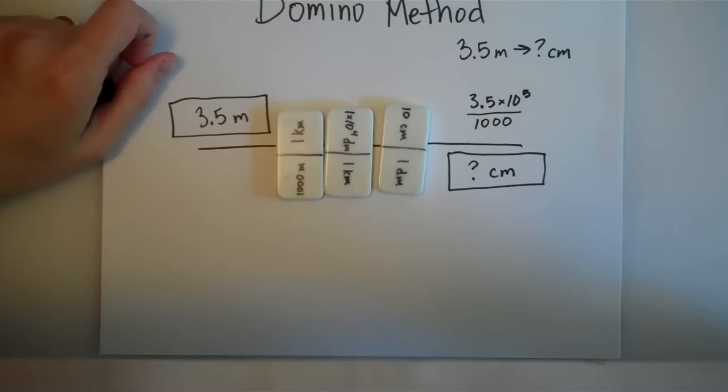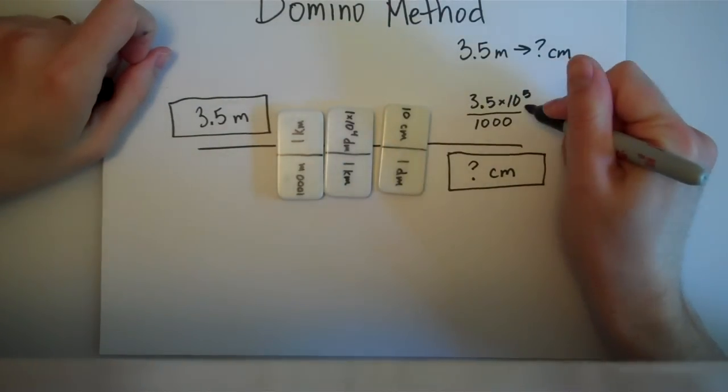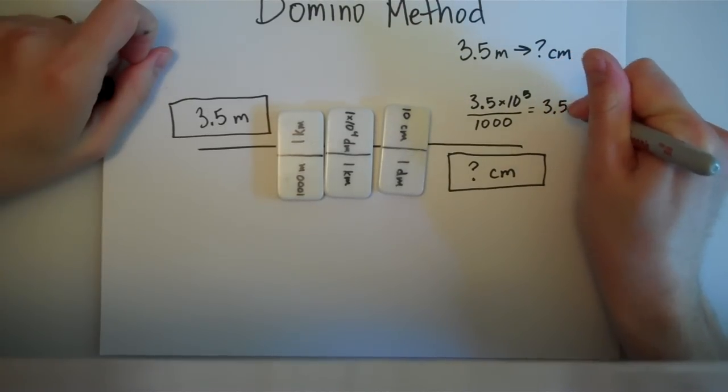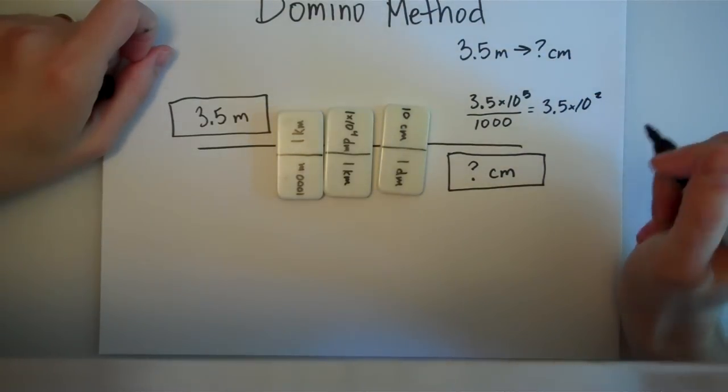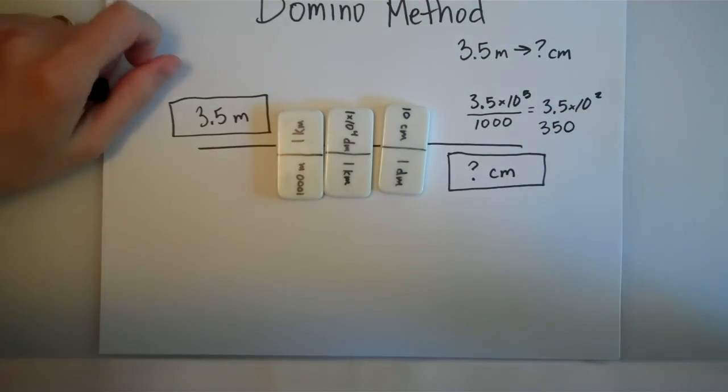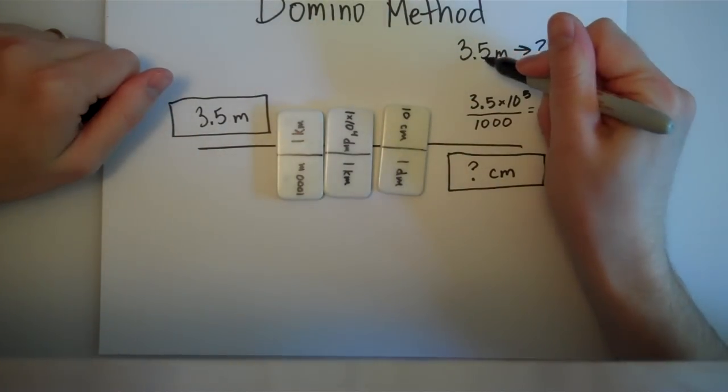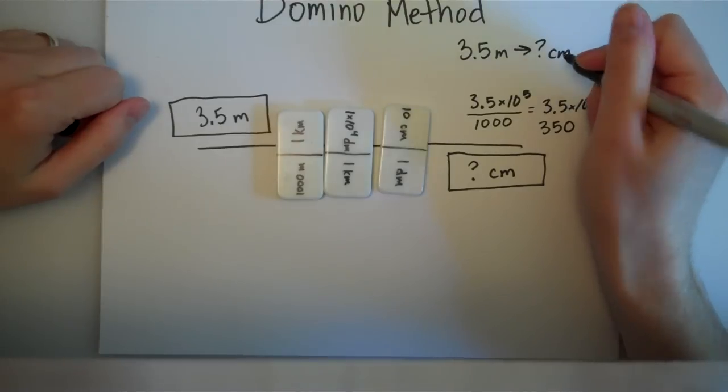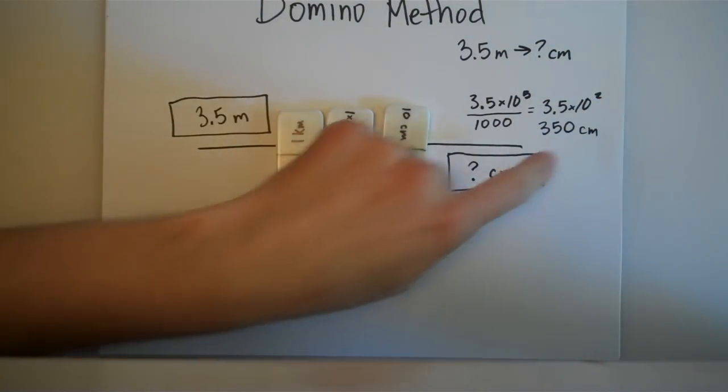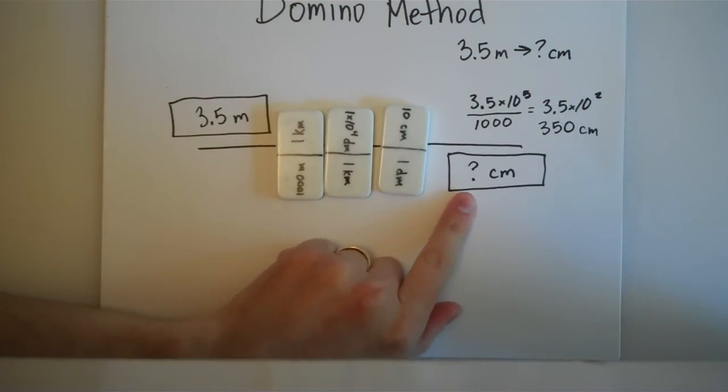Those are my numbers. I just simply divide 3.5 times 10 to the 5th divided by 1,000, which is going to give me 3.5 times 10 to the 2nd, or 350. What that means is that 3.5 meters is the exact same thing as 350 centimeters. You'll notice that my units have to be centimeters, because that is what my question mark was.